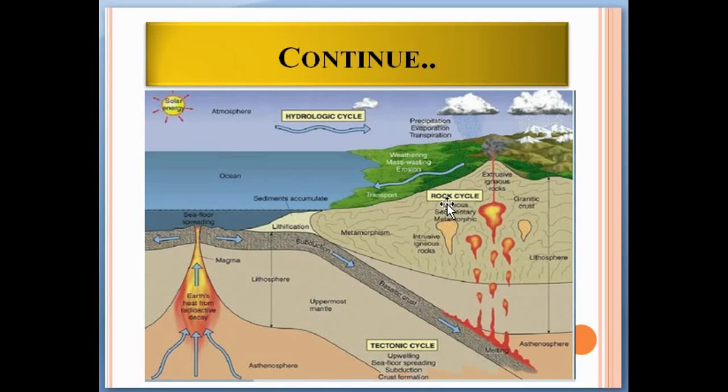The rock cycle involves pre-existing rock that is actually eroded and transported to the ground. Igneous, sedimentary, and metamorphic rock is formed. As you can see here, tectonic cycles are involved when two plates collide. One plate goes down and magma is generated into the seafloor, so seafloor spreading occurs and mountains are built.